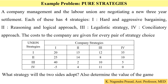Good morning. In this lecture we are going to discuss an example problem on pure strategies. A company management and the labor union are negotiating a new three-year settlement. Each side has four strategies: hard and aggressive bargaining, reasoning and logical approach, legalistic strategy, and conciliatory approach. The cost to the company is given for every pair of strategy choices in the payoff matrix.